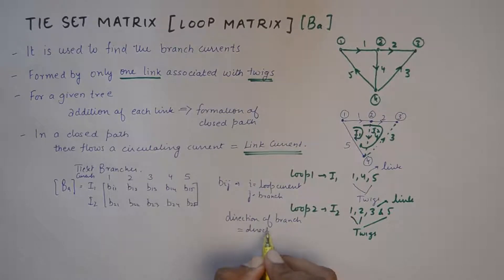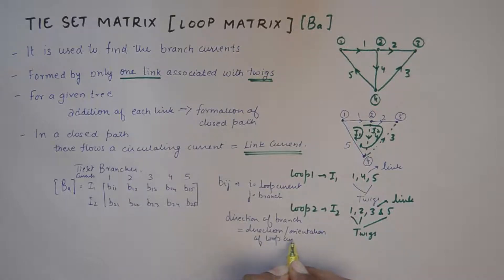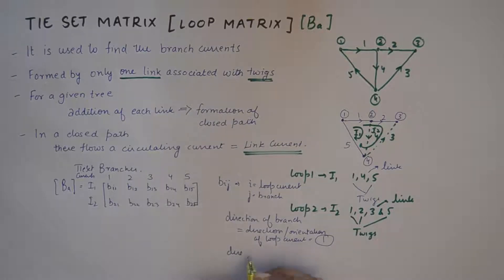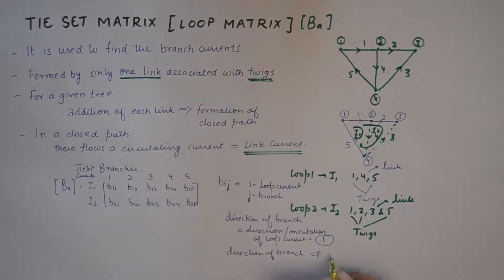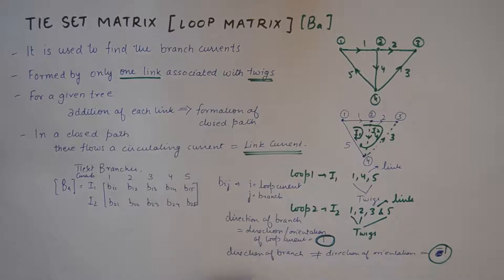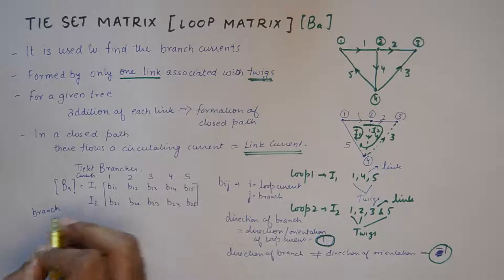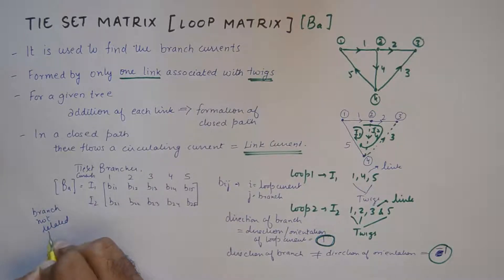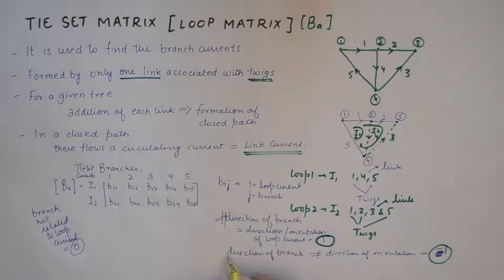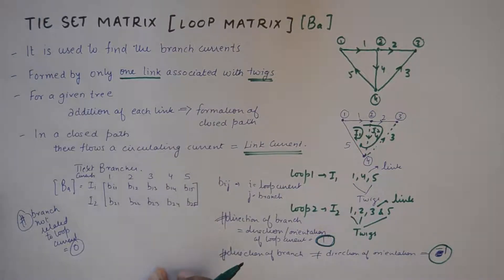The rules for populating the matrix are: if the direction of a branch is equal to the direction or orientation of the loop current, we put a 1; if the direction of the branch is opposite to the direction or orientation of the loop current, we put a minus 1; and if the branch is not related to the loop current at all, we put a 0. These are the three conditions you need to take care of.